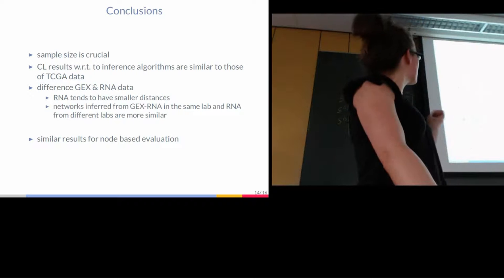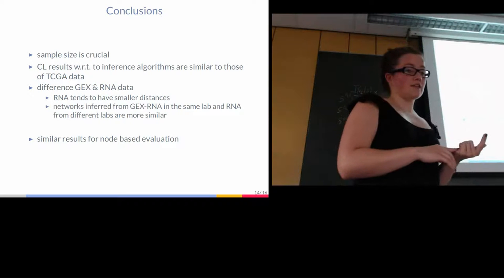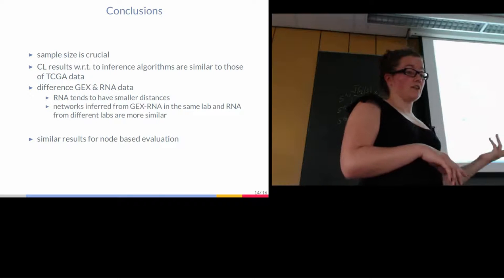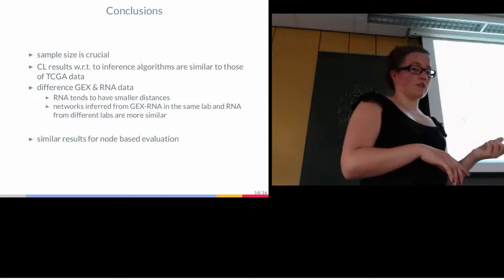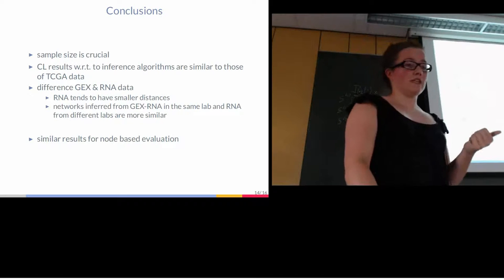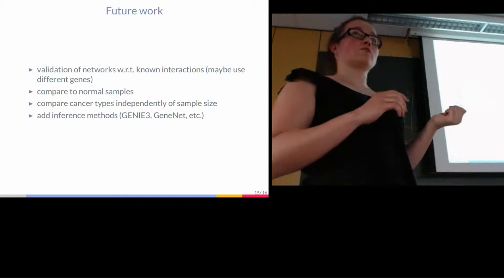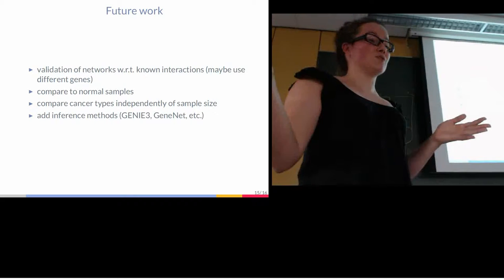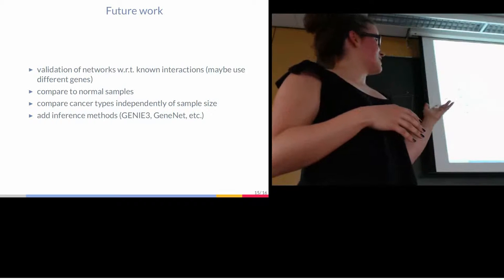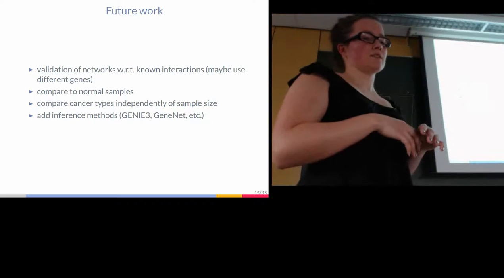So conclusion: sample size is crucial. The cell line data actually gives similar results as the TCGA data. There's a difference between gene expression and RNA data as RNA will have smaller distances between the networks. And I didn't show those here, but we have similar results for the node-based evaluation. What is missing here is we need to do some validation with respect to known interactions, which is, as I said in the beginning, difficult because we don't have that many known interactions. We have to compare to normal, compare cancer types independently of sample size. That's what Ben asked, which we haven't done. And then add more inference methods to the analysis.